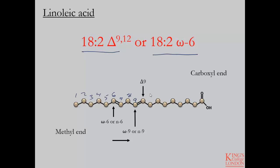Counting from the carboxylic end, you go 1, 2, 3, 4, 5, 6, 7, 8, 9 as your first double bond encountered, and then continuing in the counting system you would have carbon-10, 11, and then 12 as the second double bond. So you can see that depending on which end and which naming system you use, you would produce two different names for the same fatty acid.